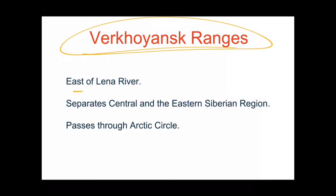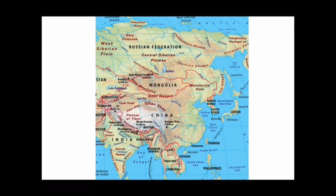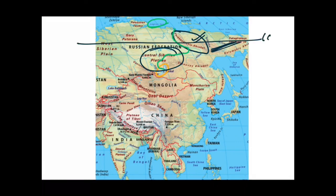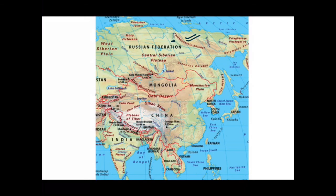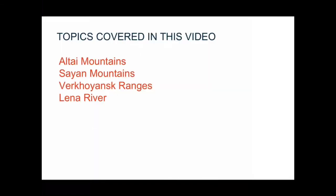The Verkhoyansk Ranges lie to the east of the Lena River and separate the Central Siberian region from the Eastern Siberian region. They also pass through the Arctic Circle. On the map, you can see the Verkhoyansk Ranges to the east of the Lena River, which originates from Lake Baikal. The ranges separate the Central Siberian region from the Eastern Siberian region. Both Lena River and Verkhoyansk Ranges pass through the 66.5 degree latitude — the Arctic Circle. We have now covered all topics: Altai Mountains, Sayan Mountains, Verkhoyansk Ranges, and Lena River.